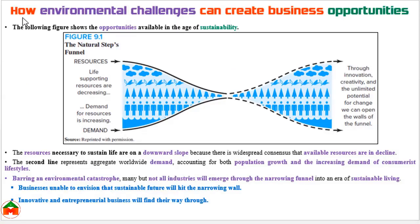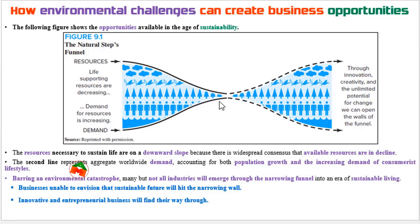To explain how environmental challenges can create business opportunities, consider a funnel diagram. One line depicts declining resources and another depicts increasing demand. This funnel indicates that although resources are declining and demand for resources is increasing, the company that focuses on sustainability — ensuring environmental sustainability — can pass through this tunnel, because there is a huge demand for products and services that focus on environmental sustainability.